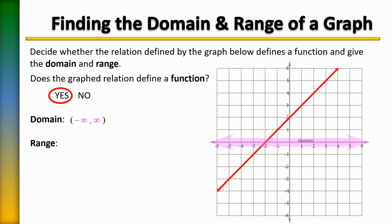For the range — how high and how low — if we look at the lowest point, there's an arrow meaning it goes forever down. Up top there's an arrow too, meaning it shoots forever up. So the range is also from negative infinity to positive infinity. That's true for any line, with the exception of vertical and horizontal lines — any other line, regardless of positive or negative slope, has both domain and range from negative infinity to positive infinity, because it has arrows on both ends and never stops.